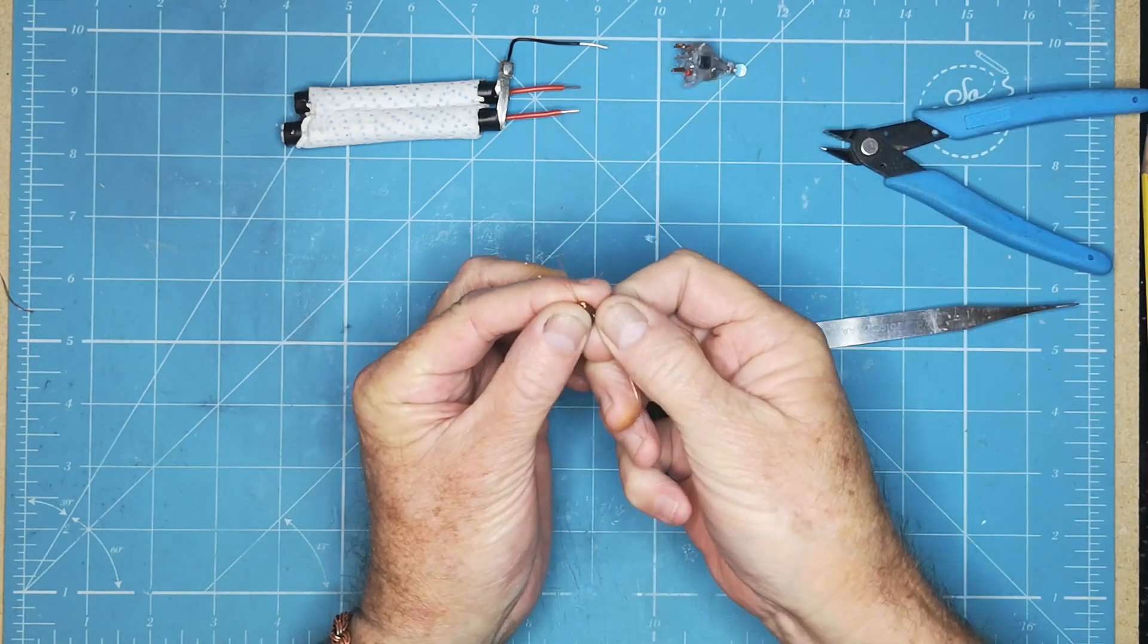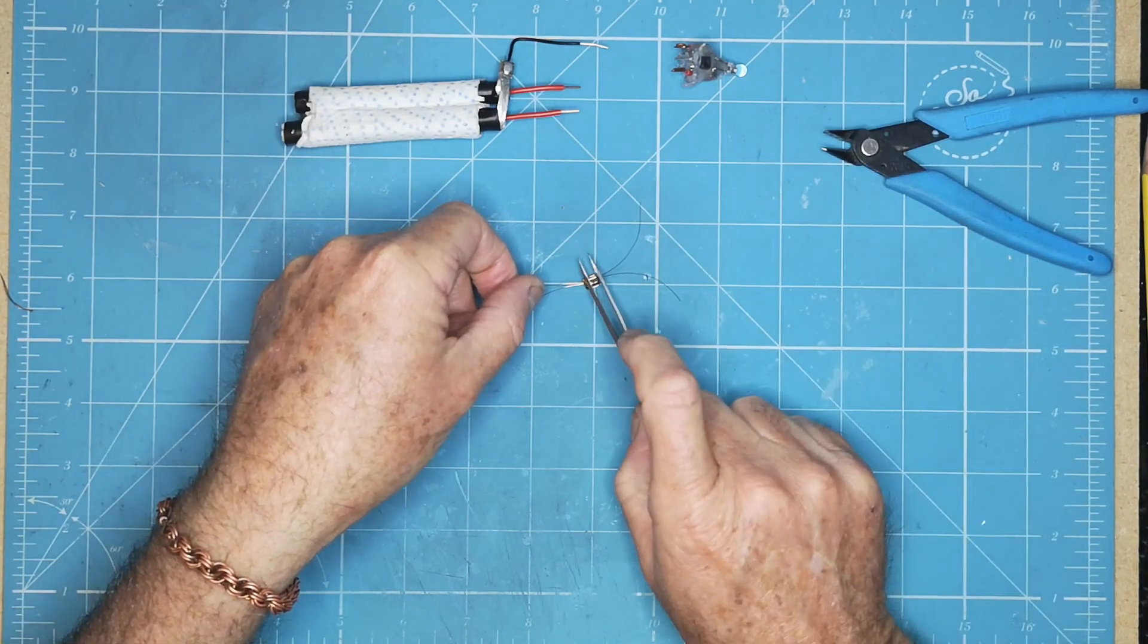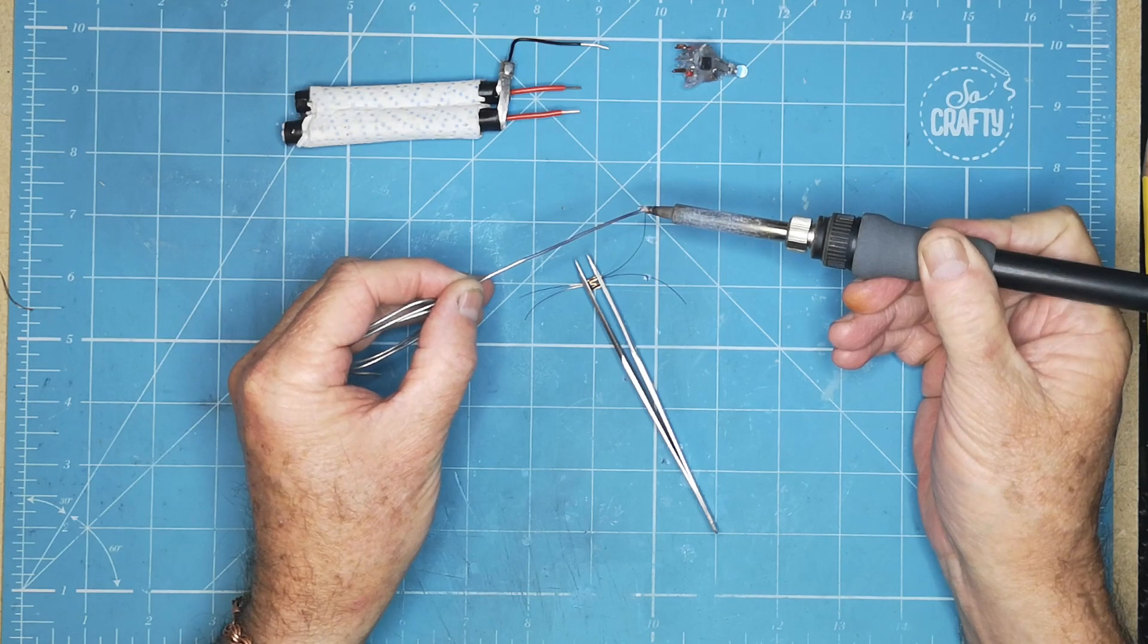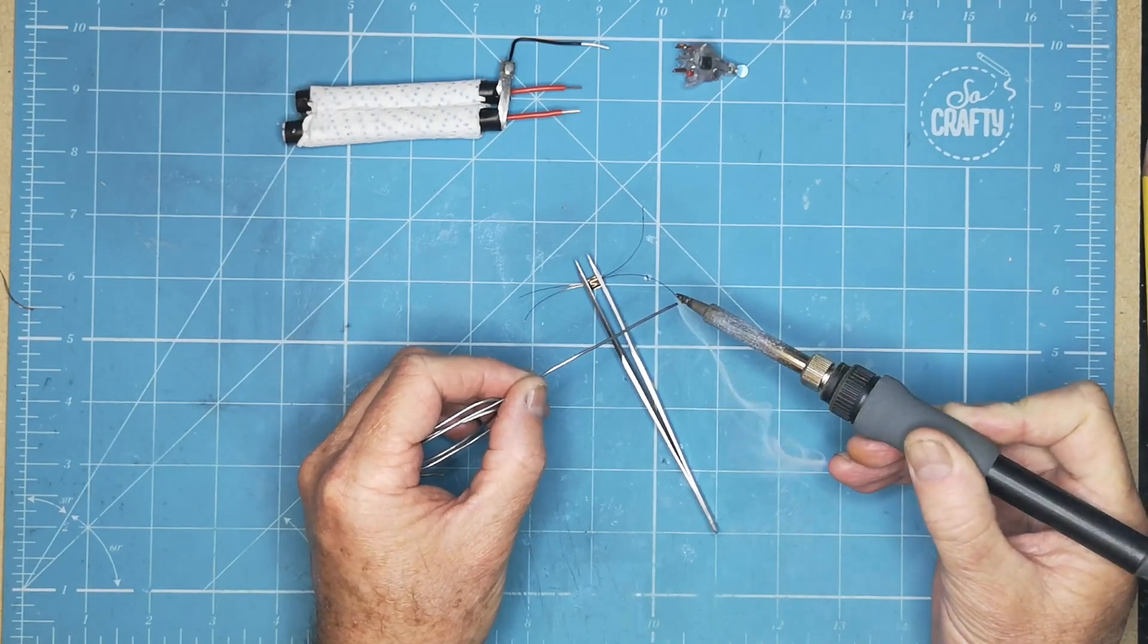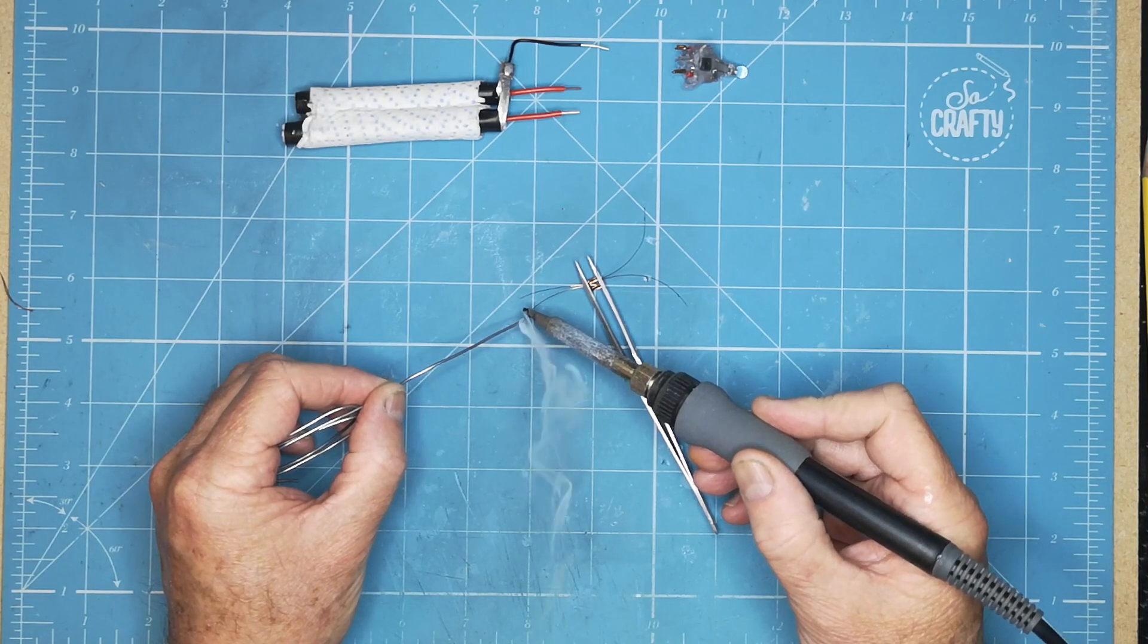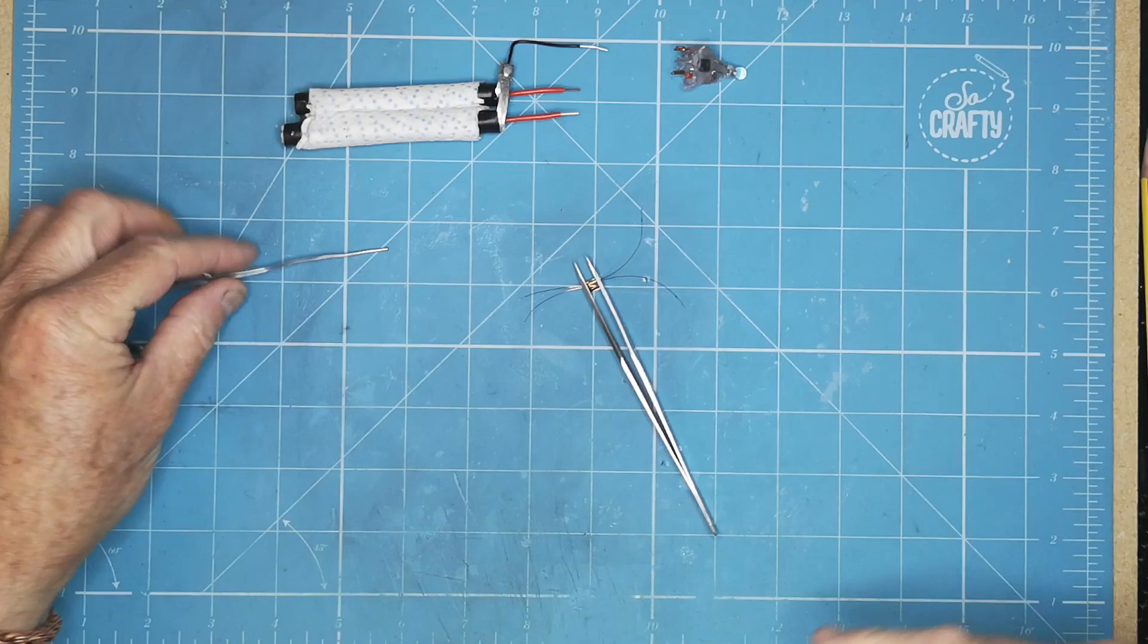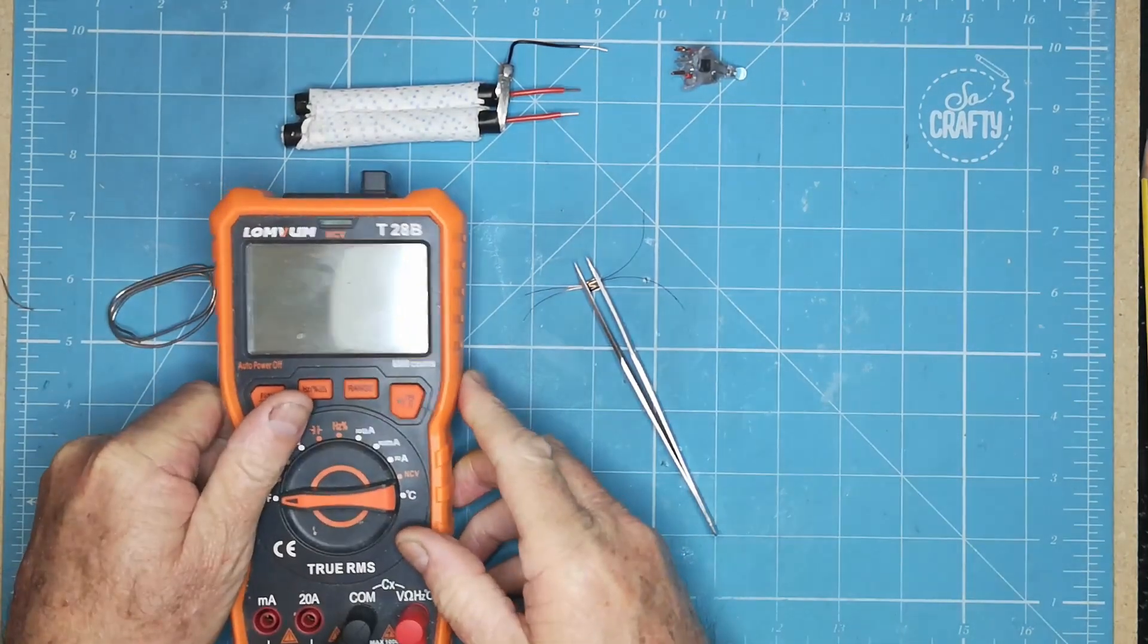Now the easiest way to get the enamel off these wires is to just use a soldering iron and heat the ends. The heat will take it off and there we go. We will just put a bit on there and the heat of the solder will remove the enamel and also tin the copper underneath and that's that.